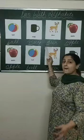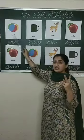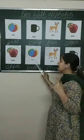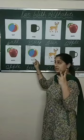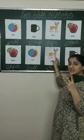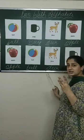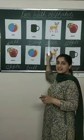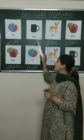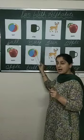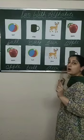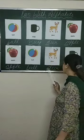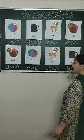What comes next after A? B. So ball will come next. Then A, B, C, D — deer will come next. Then continuing to M — mug will come in the end. So the alphabetical order will be: apple, ball, deer, and mug.